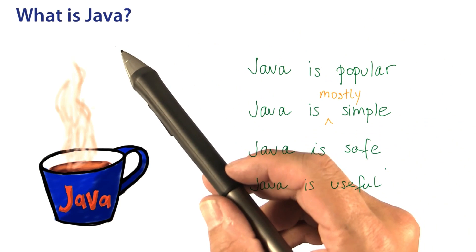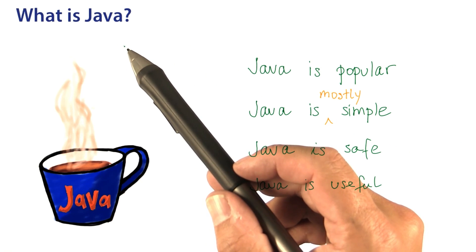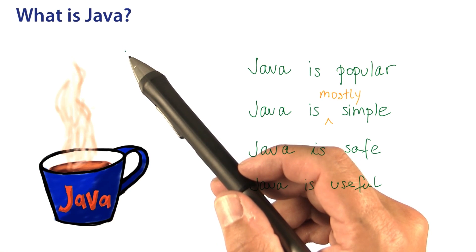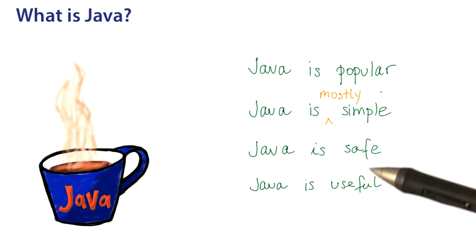So again, what is Java? Java is a programming language, a language to write instructions for the computer that is popular, simple, safe, and useful. Let's get going to write some programs in Java.